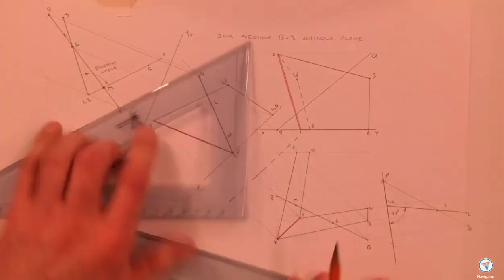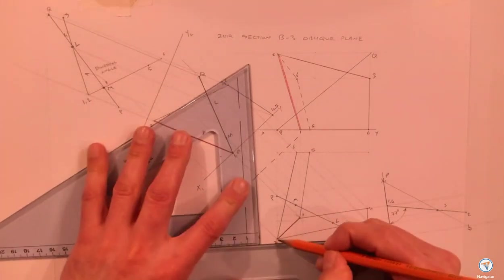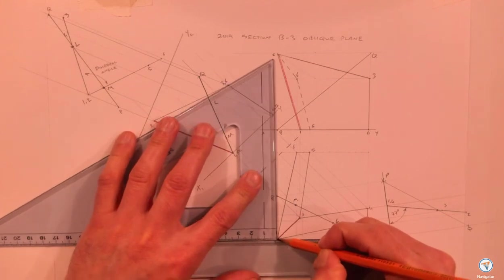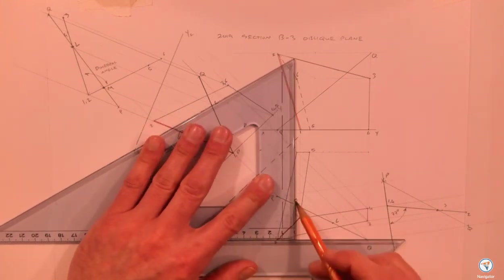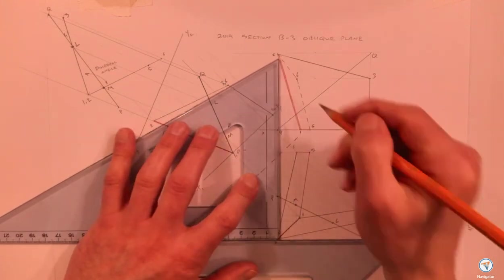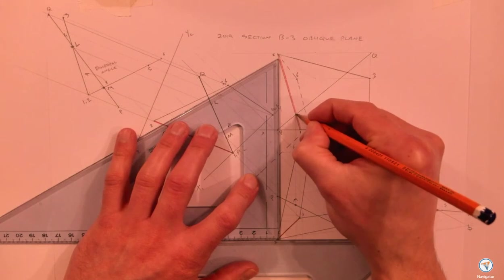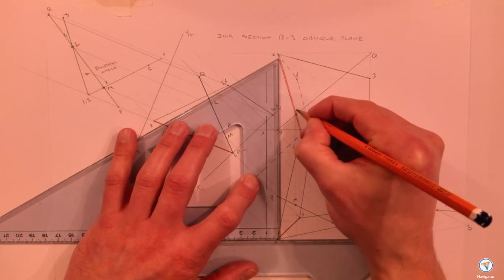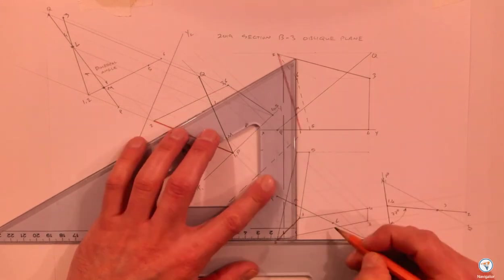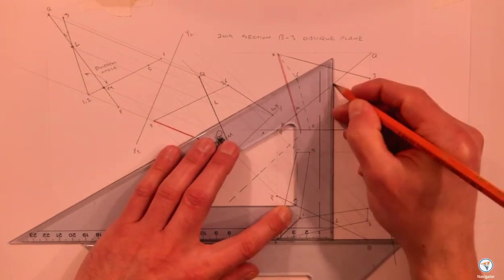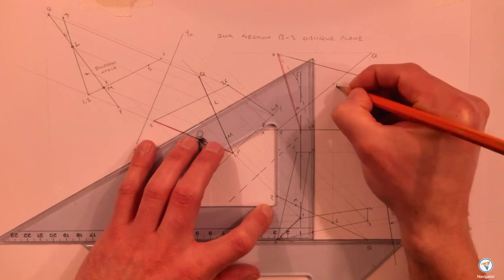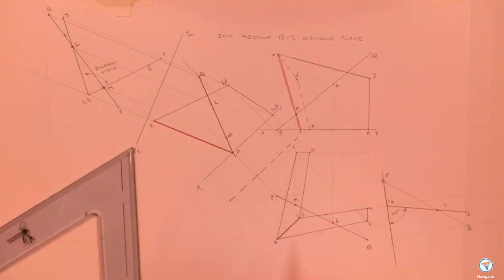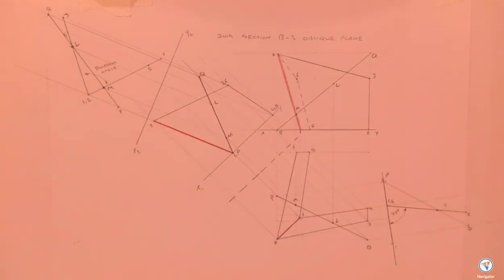I project L and M back into the auxiliary plan - M comes back onto line PQ, then L. Those are the positions of the two points in plan. Back up to elevation to finish: M comes up onto the line in elevation, and L comes up here. That shows my two points in elevation, and the question is completely done.